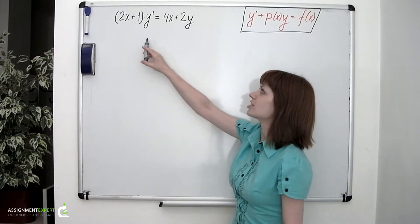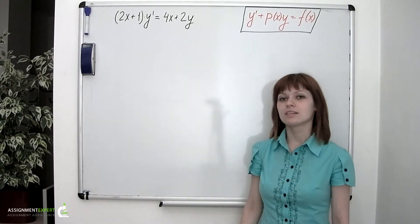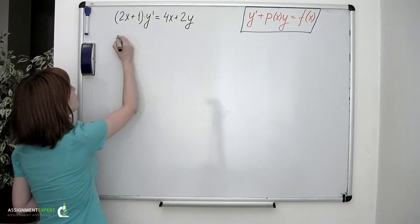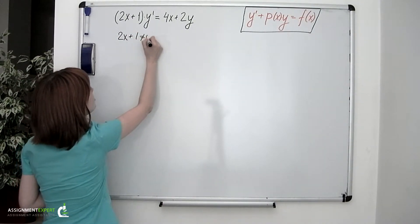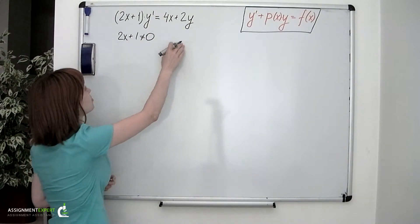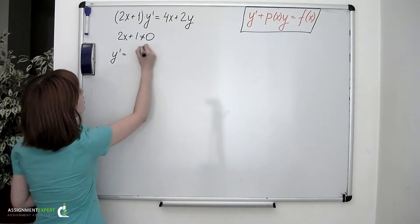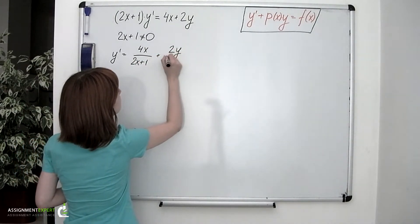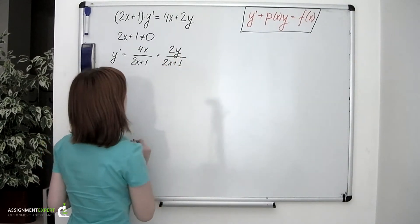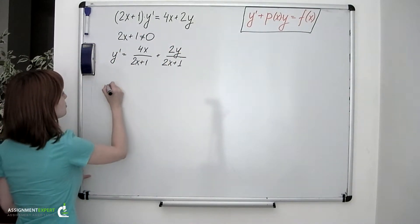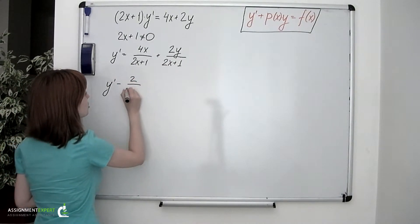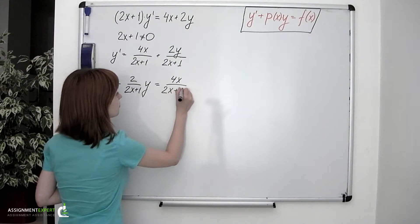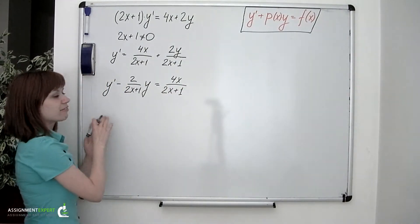Example 2. Given the equation (2x + 1)y' = 4x + 2y. The first thing we need to do is to put the given equation into the general form. Assuming that (2x + 1) is not equal to 0, we can divide both sides by this expression to obtain y' = 4x/(2x+1) + 2y/(2x+1). Moving the y-term to the left gives y' - 2/(2x+1) · y = 4x/(2x+1). Now we have our equation in general form.